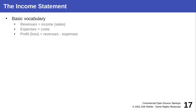Revenues — also called income or sales — is the money that comes in from customers. Expenses are your costs: labor, operating hardware, office space, etc. Profit is the difference between revenues and expenses — what's left after paying everyone. A positive value means profit; if you spend more than you take in, you have a loss.